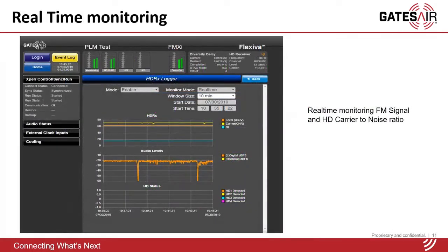In addition to displaying them on the front page, we also have the ability to create histograms where you can look at the performance of the HD system over a period of time. So not only can you look at it currently, but you can go back several days, weeks, and even months to see what the audio performance was or to try to troubleshoot any problems.